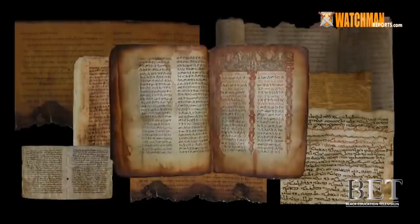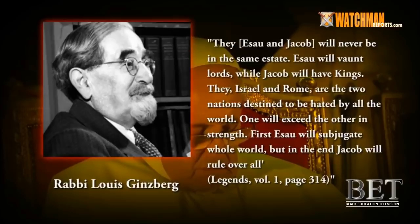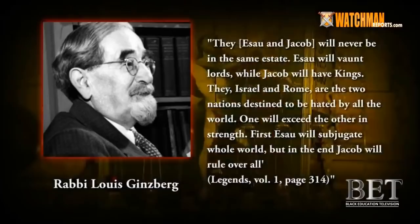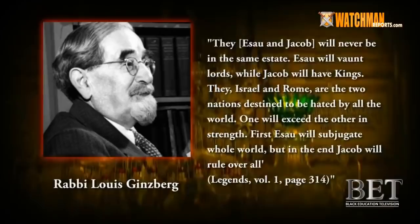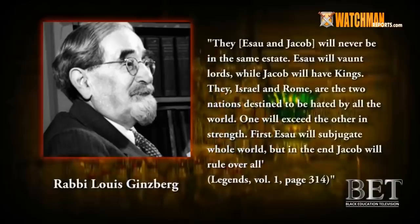Lewis Ginsberg, in his book titled Legends of the Jews, writes: 'They, Esau and Jacob, will never be in the same estate. Esau will vaunt lords, while Jacob will have kings. They, Israel and Rome, are the two nations destined to be hated by all the world. One will exceed the other in strength. First, Esau will subjugate the whole world.' This is a white man's world — the white man from Europe dominates the whole planet. White men go into any country and kill everybody, take over anything they want. But in the end, Jacob will rule over all. Legends, Volume 1, page 314.